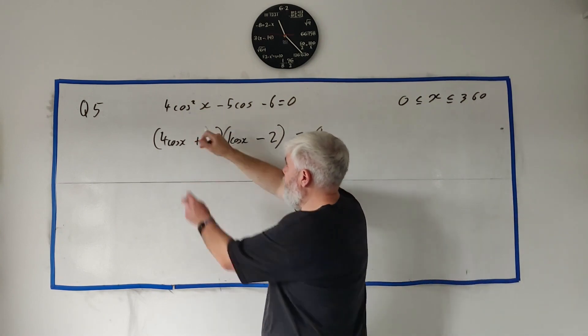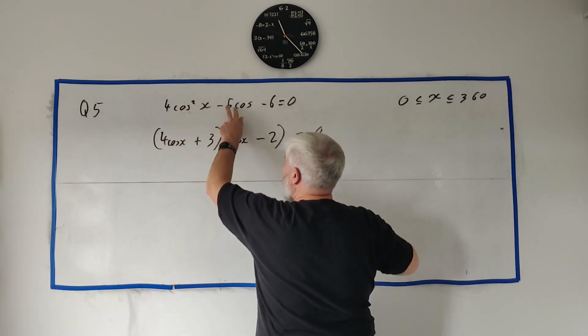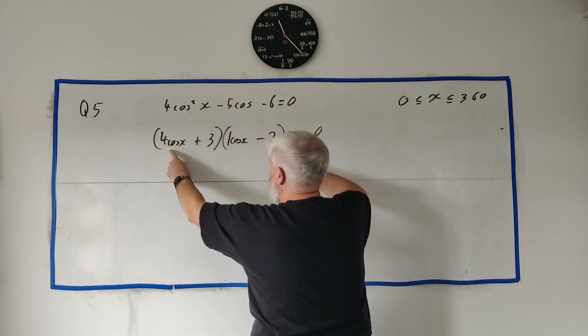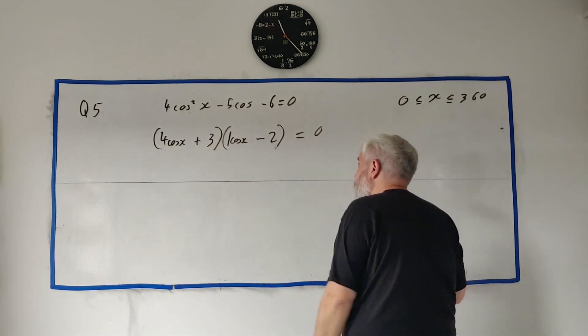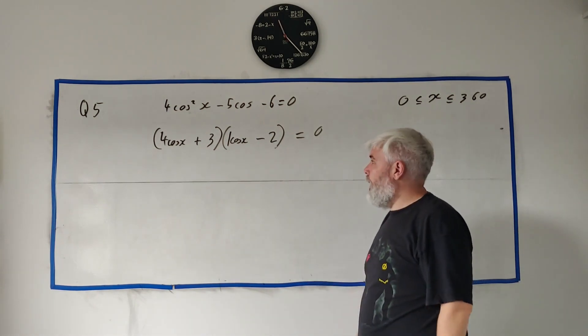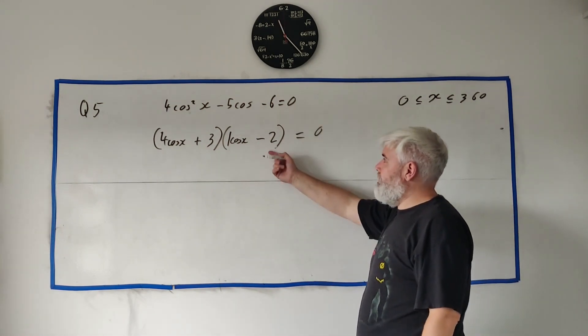That would combine to get the first one. It would combine to get the middle one. And this with this. So does the last one work? Just check. Three times minus two is six. It works. Okay, so that's the answer to that.